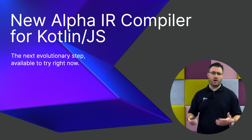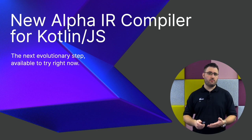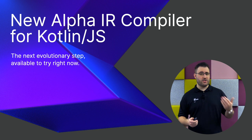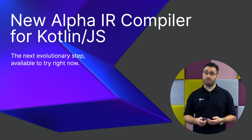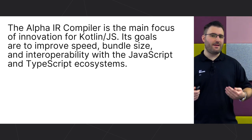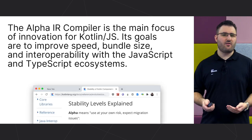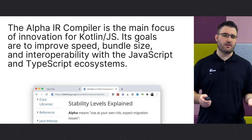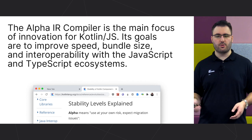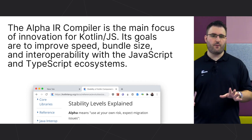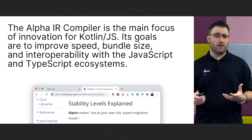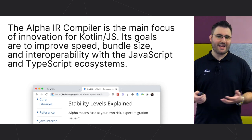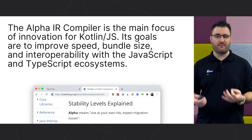Up until now, we talked about topics available once you upgrade to Kotlin 1.4. But since our subject is Kotlin.js in 1.4 and beyond, I also want to talk about the next evolutionary step — the new Alpha IR compiler for Kotlin.js. The new compiler is going to be the main focus of innovation for Kotlin.js. It currently has Alpha Stability Level, and the team is working hard to make it the new default, improving topics around speed, bundle size, and interoperability with the JavaScript and TypeScript ecosystems.